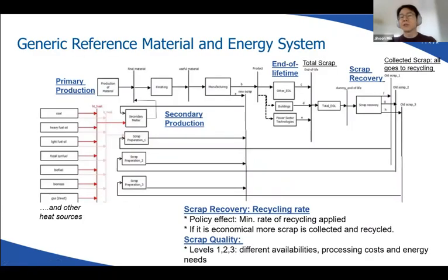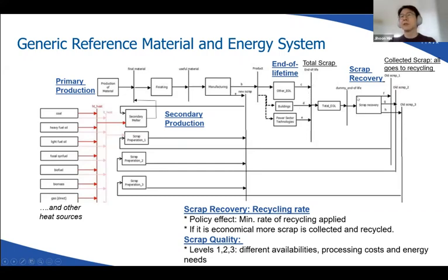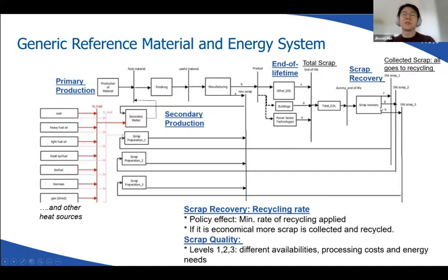This shows the general representation of industry sectors in our model. At the top, we start from primary material production, producing finished material. Then we go on to product manufacturing. At the end of the lifetime of those products, we collect scrap material. A certain part of the scrap is picked up through a recovery procedure and fed back into secondary material production. This scrap process is available for metallic materials, not for cement.